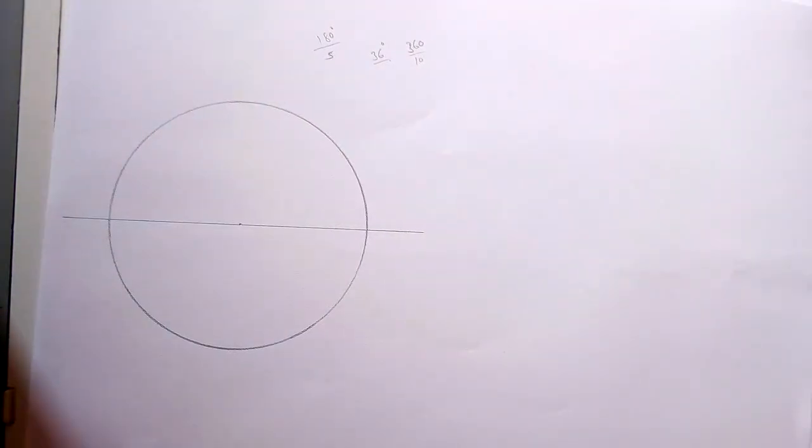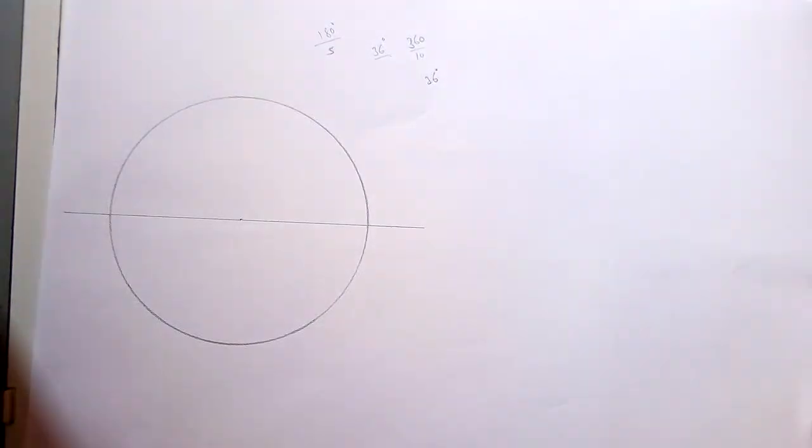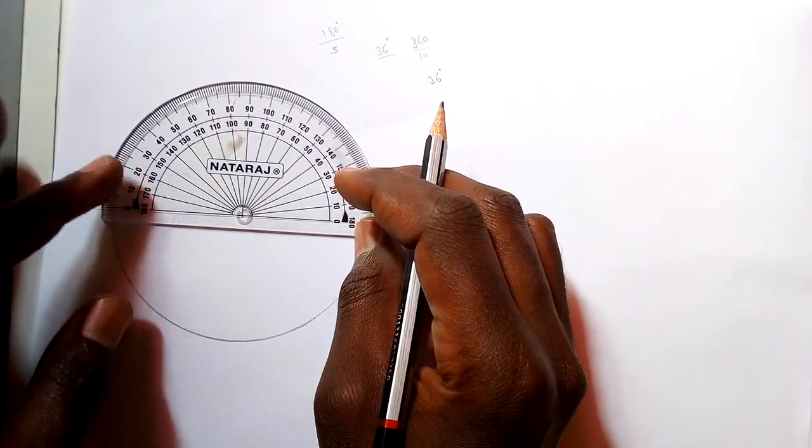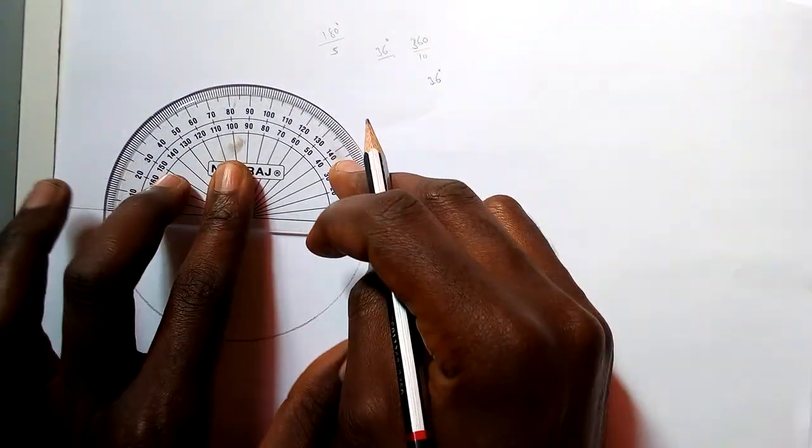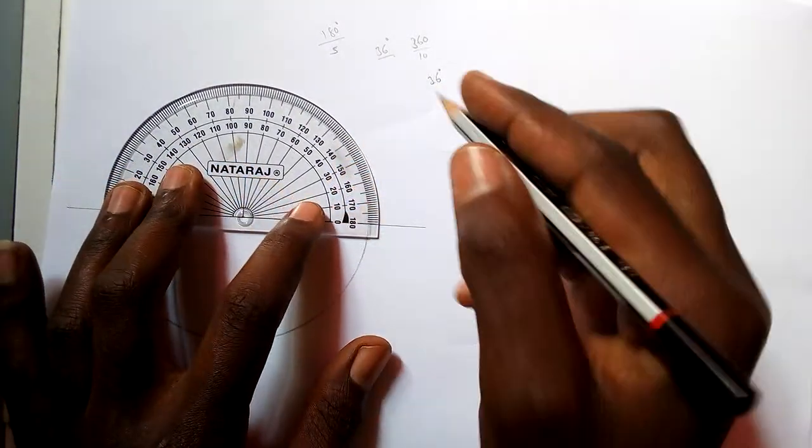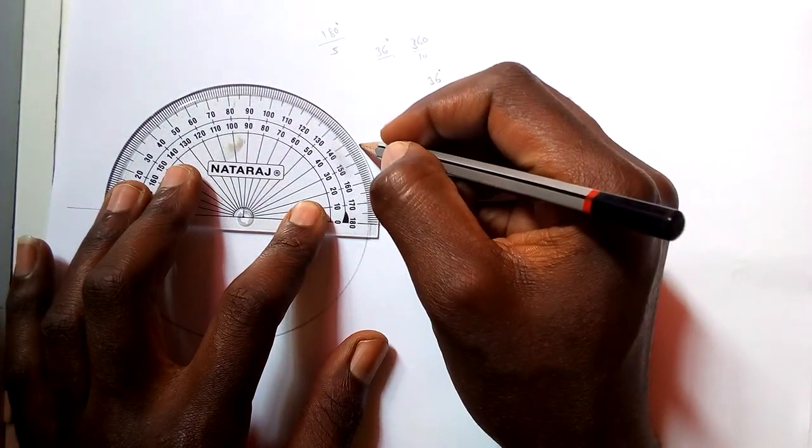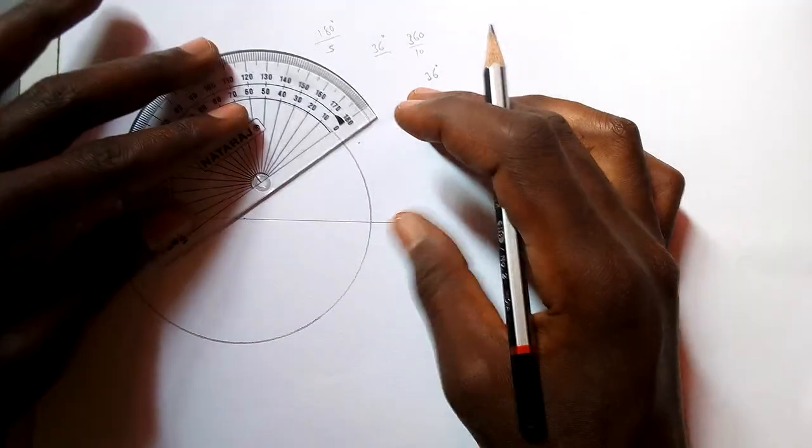So by using a protractor, how do you measure? We want to measure 36 degrees on each side.